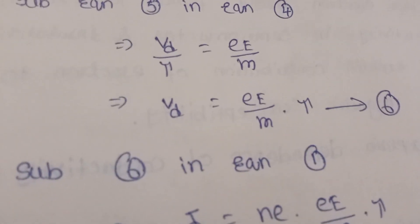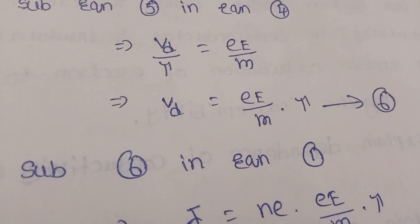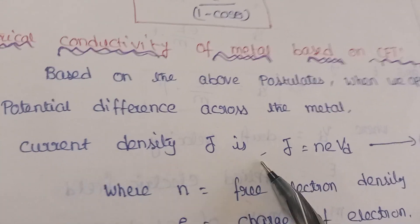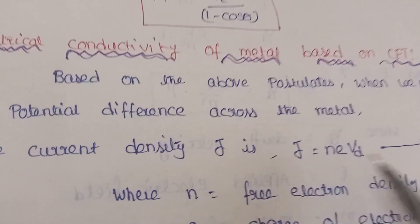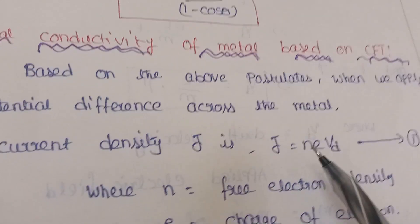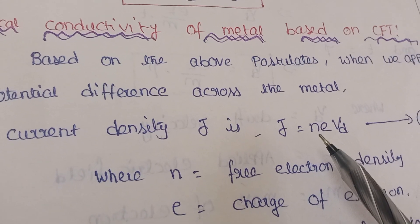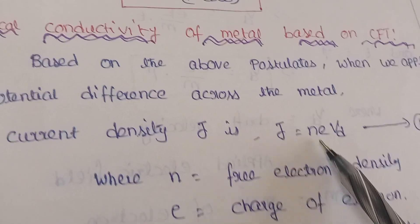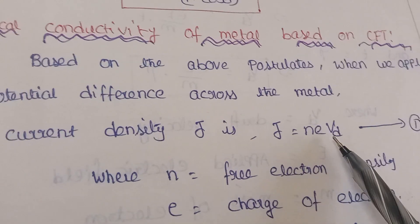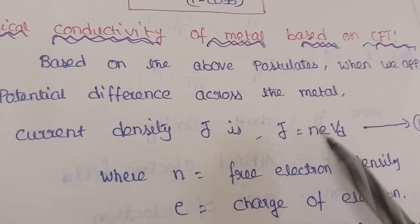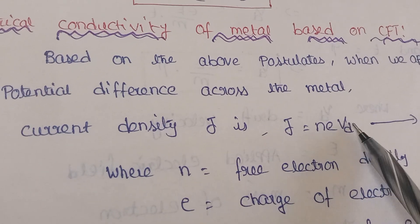Substituting the drift velocity expression, the current density is given by j = nev_d, where n is the free electron density, e is the charge of the electron, and v_d is the drift velocity. This is the formula for current density.